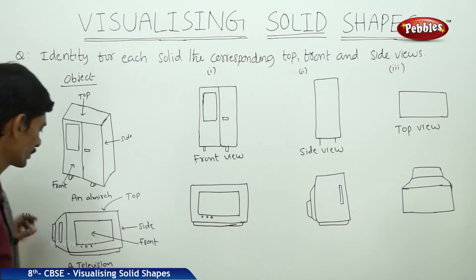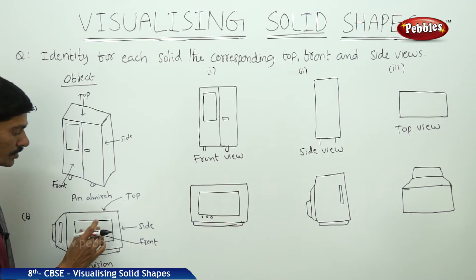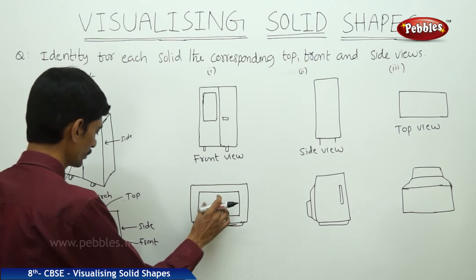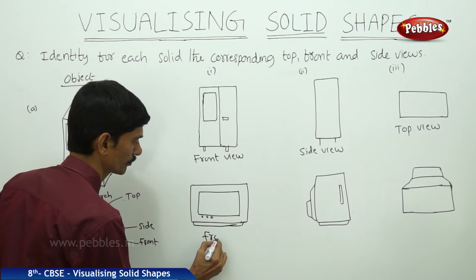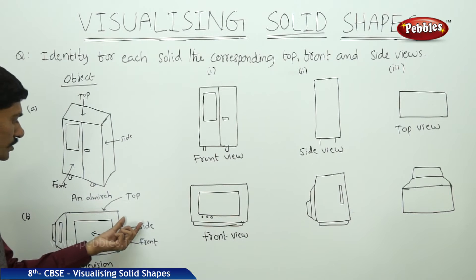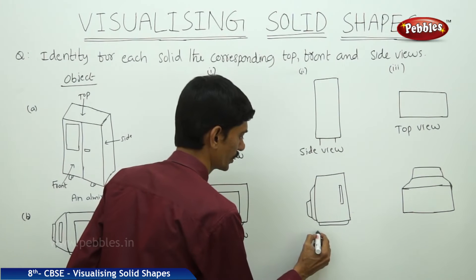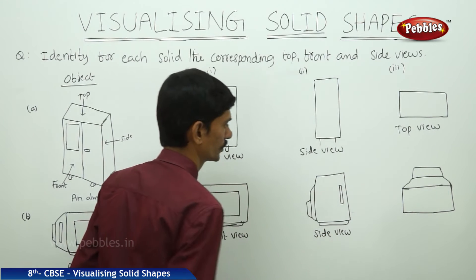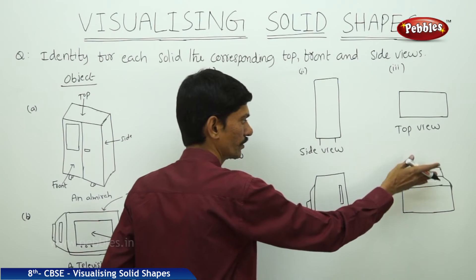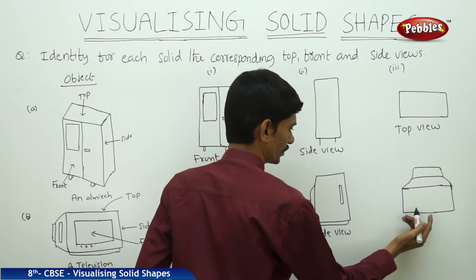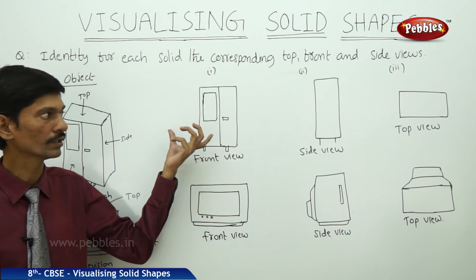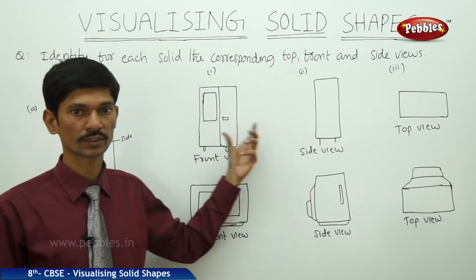The top view also shows a rectangular shape, so it is the top view of the almirah. Next, for the television set: the first figure is the front view where the screen appears. The second is the side view. From the top, we can see even the back side of the television set, so that is the top view.